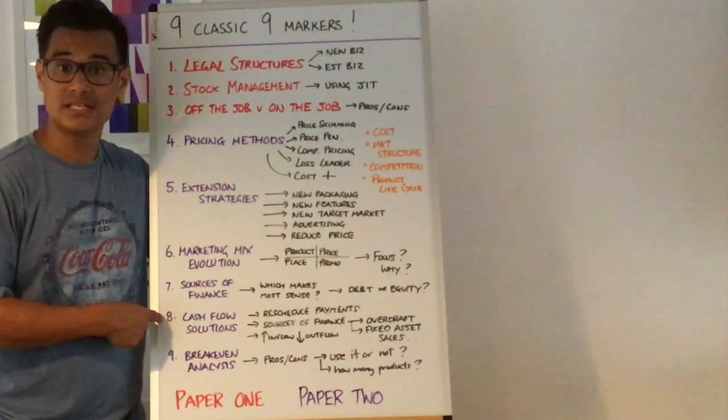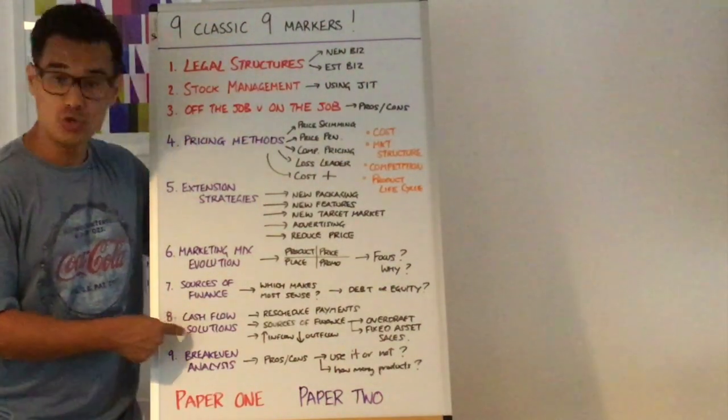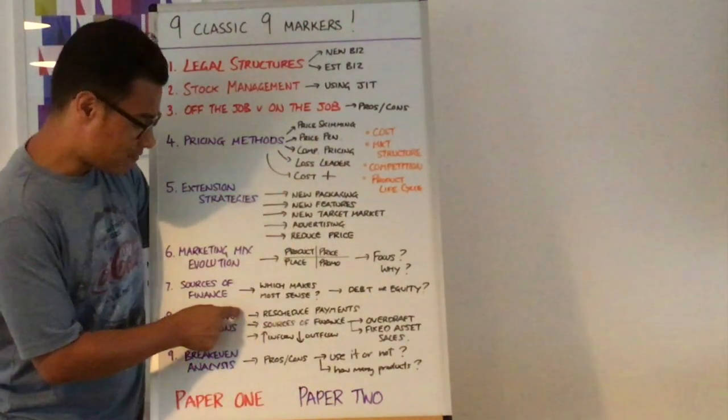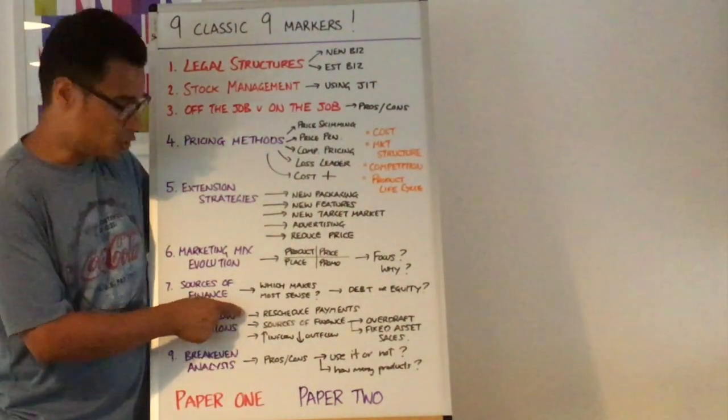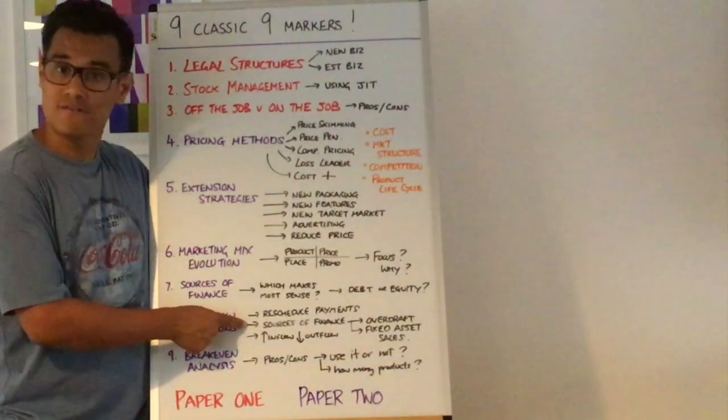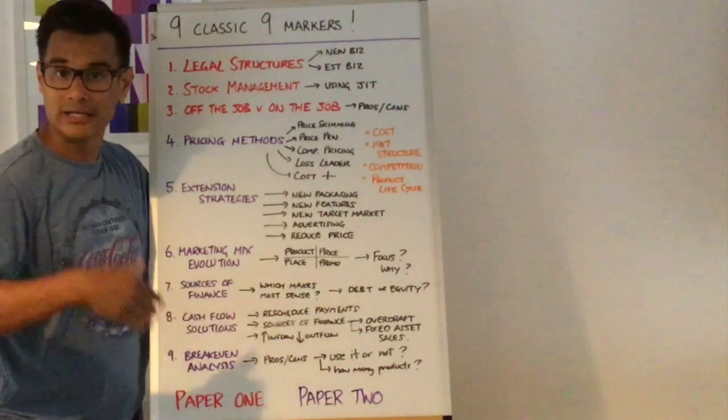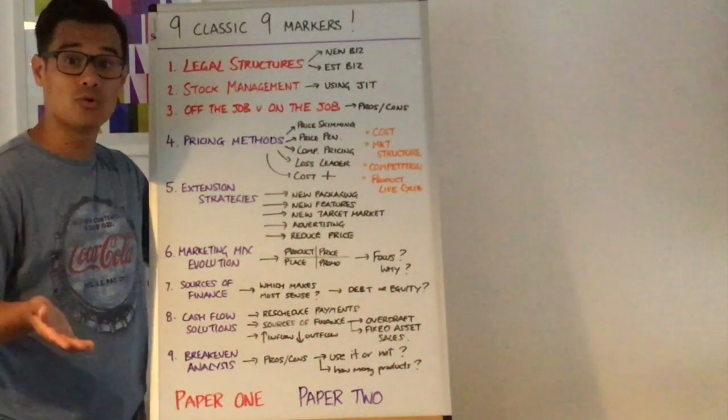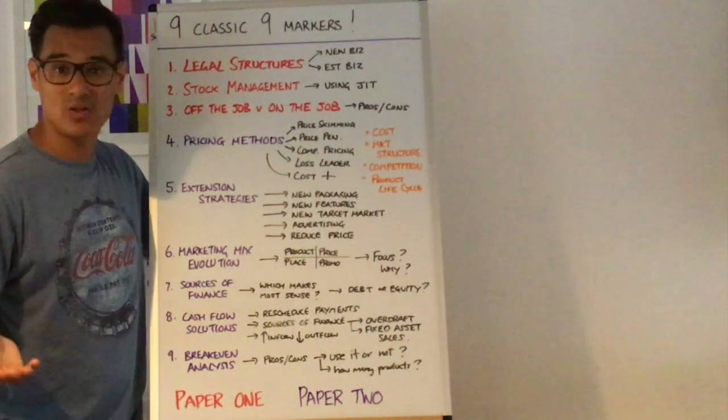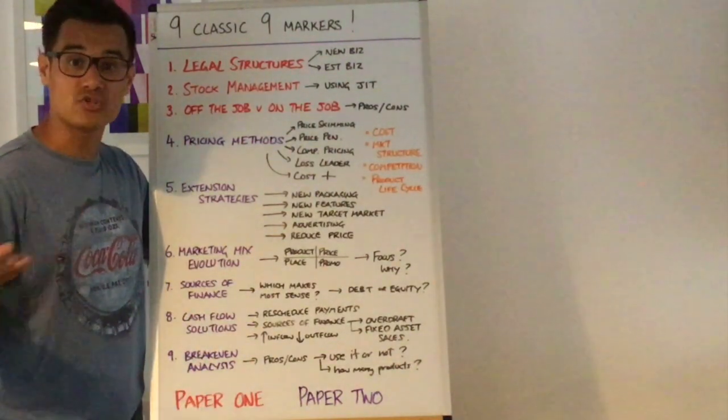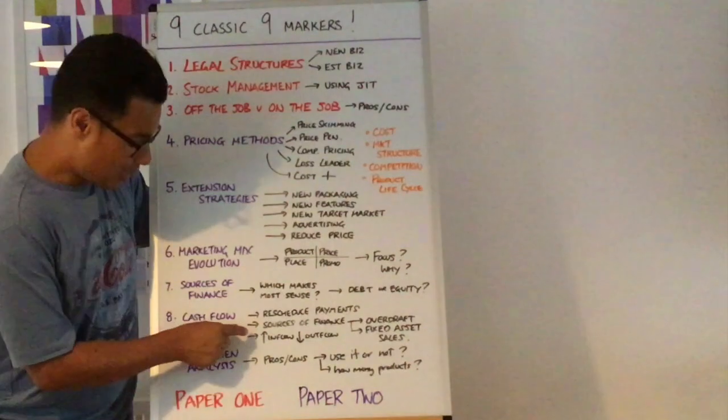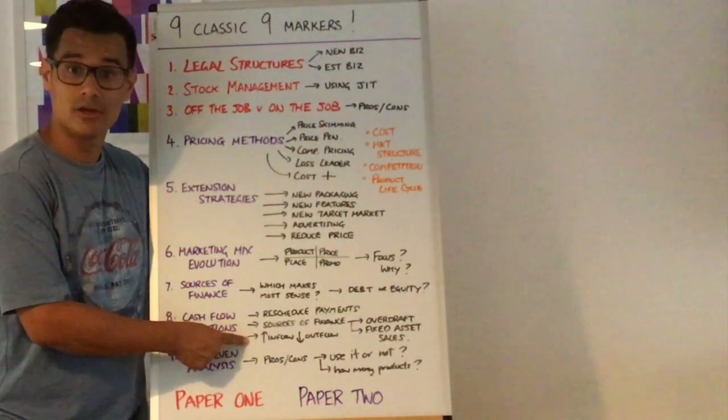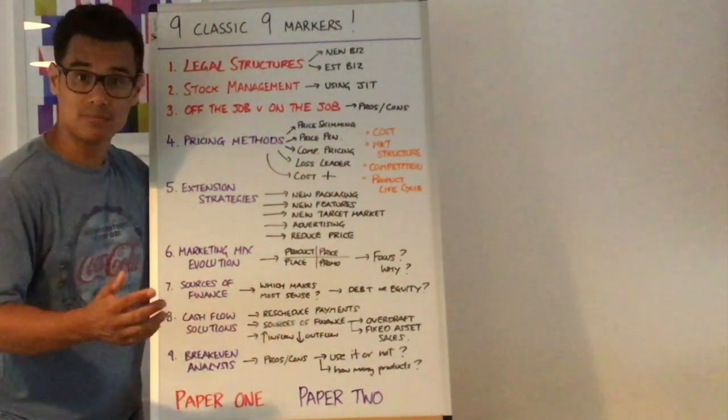Related closely to that that you can see in the finance topic, so paper two is cash flow solution. Recommend the best cash flow solution to this business. For that you could be thinking about rescheduling your payments perhaps, sources of finance so if it's a cash flow problem very likely an overdraft would be an obvious source of finance they could use but they could also use other ones, for example they could sell their fixed assets, they could sell their cars, their buildings for example if they own them and then try and lease them in the case of cars. Also just the basics, for cash flow solutions you want to increase your inflows and you want to reduce your outflows, as simple as that.